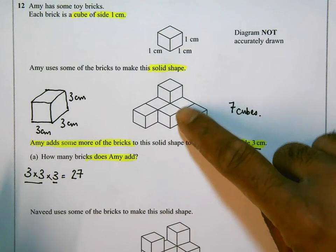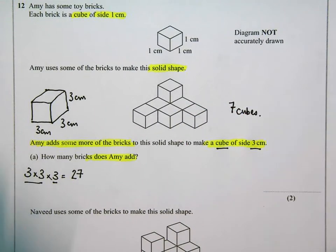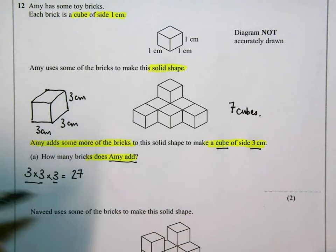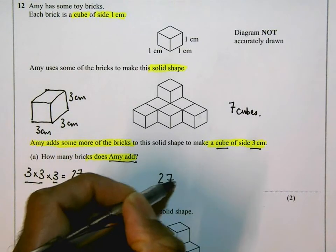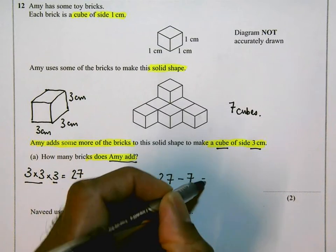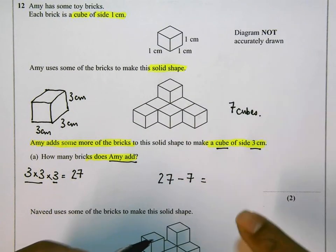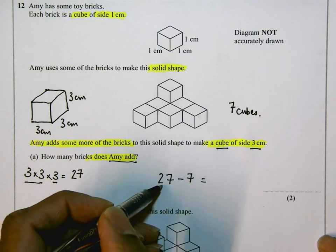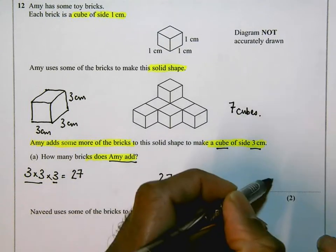So she'd need 27 cubes altogether to make a cube that has side three centimeters. But if she's starting with this one, which already has seven, the question says how many bricks does Amy add to it? Well, to find out how many more bricks she needs to add on to this shape over here to make a cube of side three centimeters, 27 take away seven, that's going to give me 20 cubes.